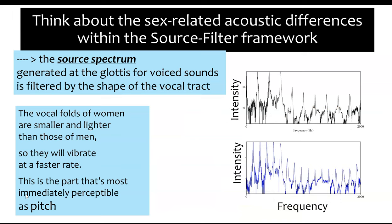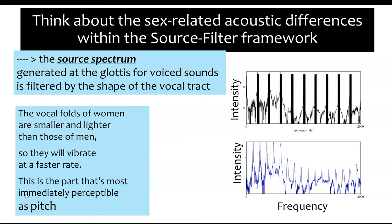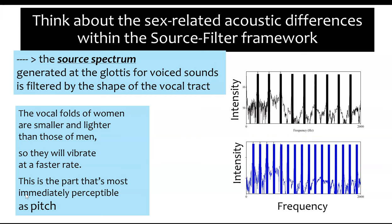We can measure pitch on a spectrum by looking at the placement of harmonic frequencies. For a woman's voice, the harmonics are more widely spaced because they're multiples of a higher fundamental frequency — for example, 200 Hz, so 200, 400, 600, 800, and so on. For a man's voice, the harmonics are spaced more closely together as multiples of a lower number, like 120 — so 120, 240, 360, 480, etc.